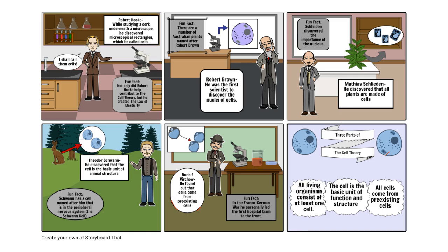This figure is going to show a nice little story of how cells were discovered. We'll start with Robert Hooke, who was looking at cork and discovered cells. Robert Brown was the first person to discover the nuclei of cells. Then Matthias Schleiden discovered that all plants are made of cells — so he discovered plant cells.